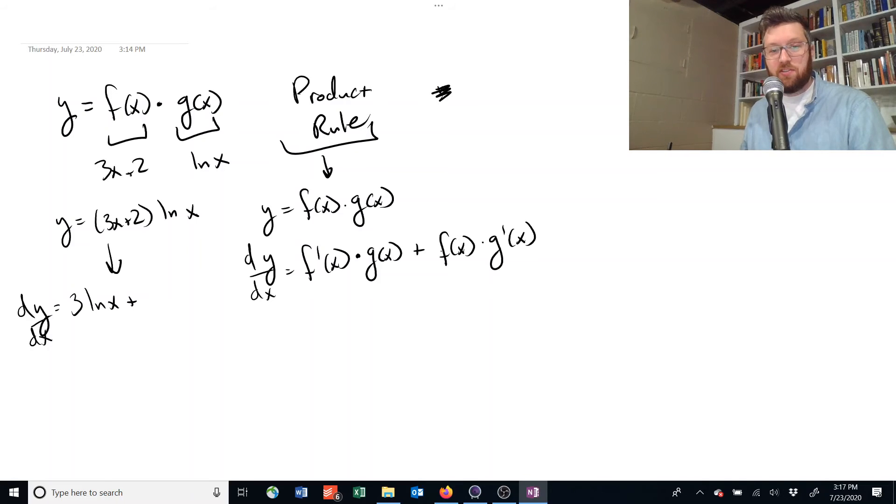Then we add to that the reverse, so we're going to now leave 3x plus 2 alone and take the derivative of g of x, which here is the natural log of x. And if you watched the last video, that's equal to 1 over x. And there you go. We've figured it out.